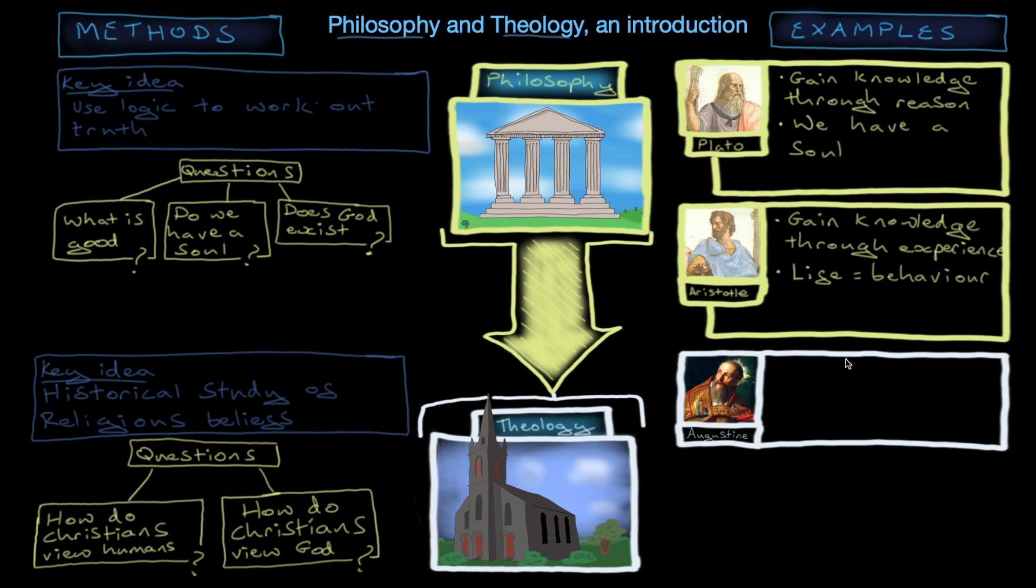The first one's Augustine. Now, Augustine, he drew very much on Plato. So he was a follower of Plato. And took a lot of Plato's ideas and just turned them into Christian ideas.